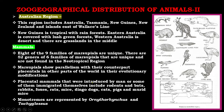Placental mammals that were introduced by humans or immigrated themselves include rodents and bats, rabbits, foxes, rats, mice, dingo dogs, cats, pigs, and murid mice. Monotremes are represented by Ornithorhynchus and Tachyglossus, that is the duckbill platypus and the echidna.